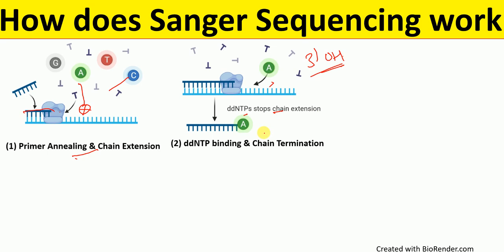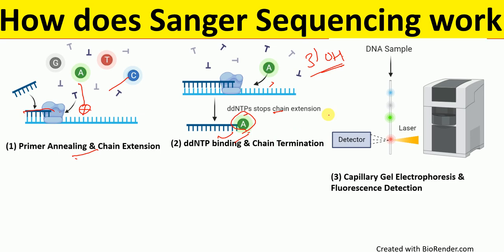As shown here, when a ddATP has been added, the chain is terminated. The random addition of ddNTPs at different places results in the creation of millions and billions of copies of the DNA sequence of interest, terminated at random lengths by these ddNTPs. These chain-terminated oligonucleotides are then separated via electrophoresis.